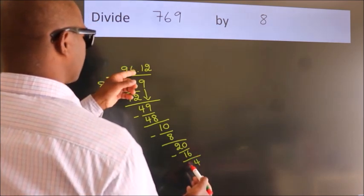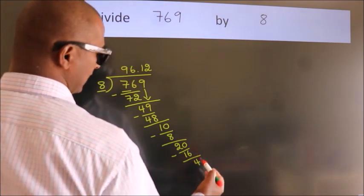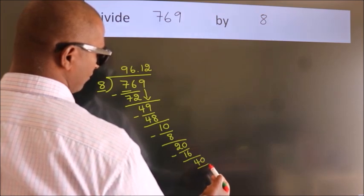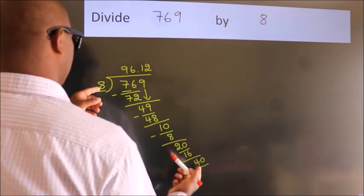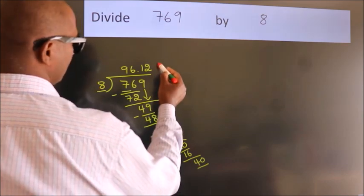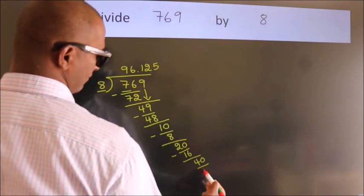After this, we already have the decimal, so directly take 0. So 40. When do we get 40 in the 8 table? 8 fives, 40.